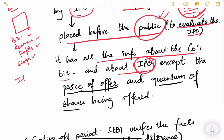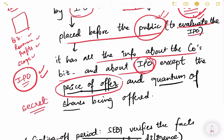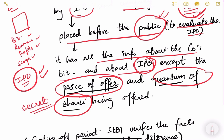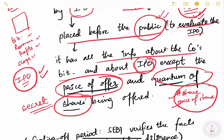The common public can read about the company's history, business, revenue, and profit in the red herring prospectus. However, only two things are not mentioned — they are kept secret. The first is the offer price: at what price the company is going to offer its shares. The second is the quantum of shares: how many shares they are going to offer. So both the number of shares and the price per share are not declared in the red herring prospectus.